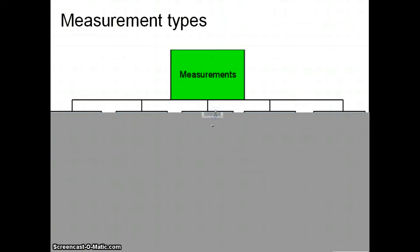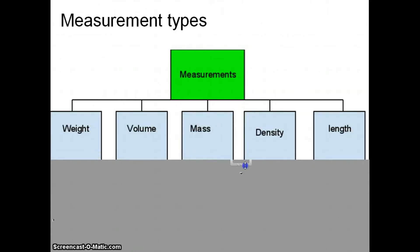Measurements. There are five different measurements that we are going to use in this class and maybe a few others, but these are the main ones. The first one is weight. Next is volume, mass, density, and length.